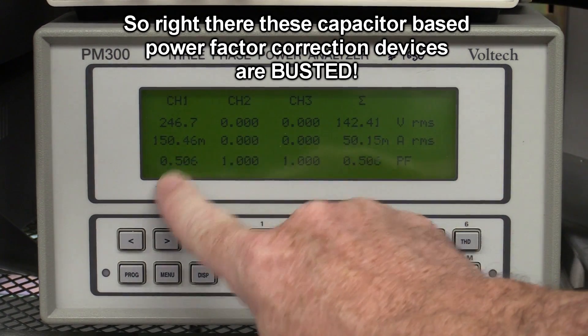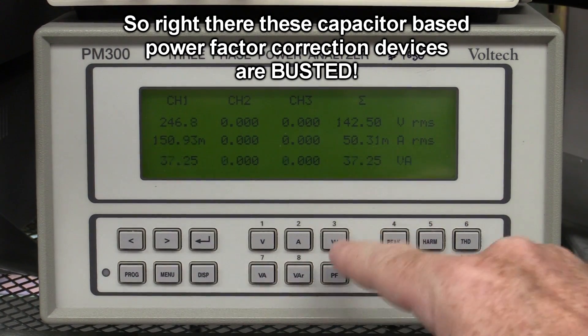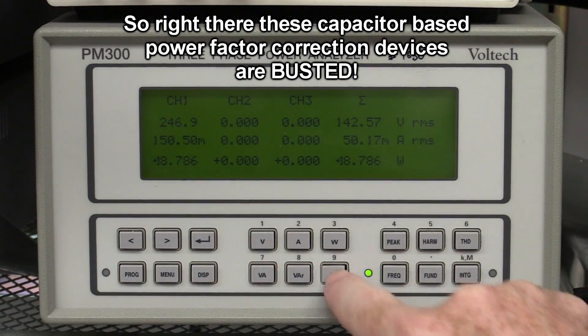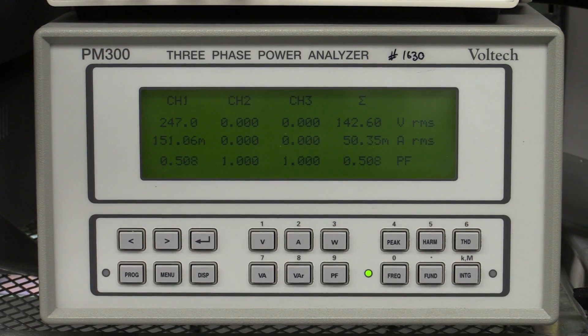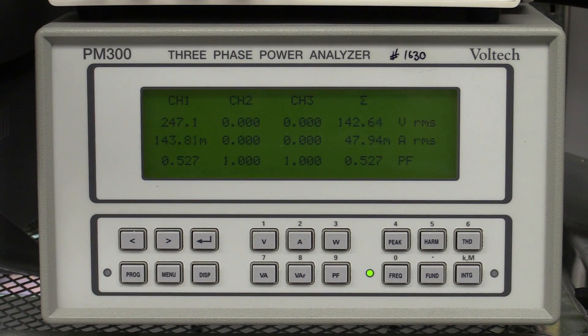Anyway, so you can see that the power factor, it's just a ratio VA versus watts, and the power factor is about half. So let's plug in the wankerizer gadget and see if it makes a difference. That power factor, if this thing works, it should be a higher power factor, because the closer you get to one, the better. You're correcting for that.